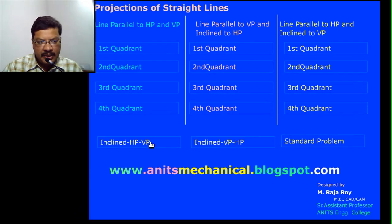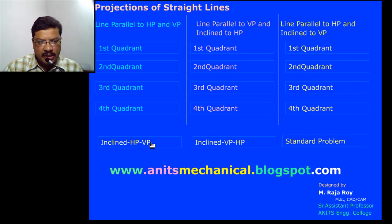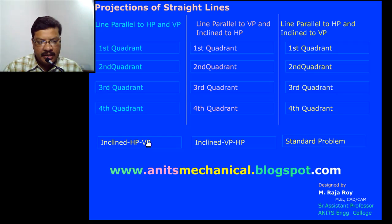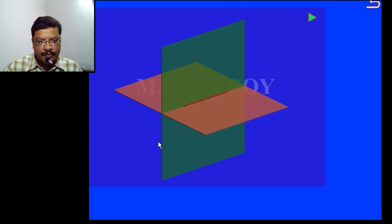Now we will see the typical case when the straight line is inclined to both the reference planes. First we will take the inclination of the line with respect to the horizontal plane, then I will consider the inclination with respect to the vertical plane. That means first I will take θ, after that I will take Φ.